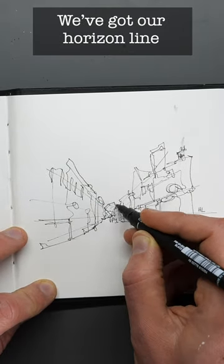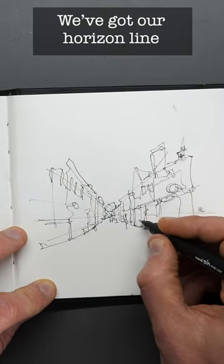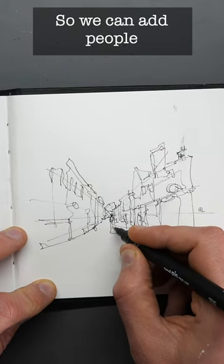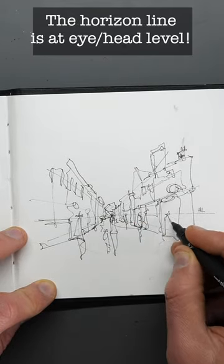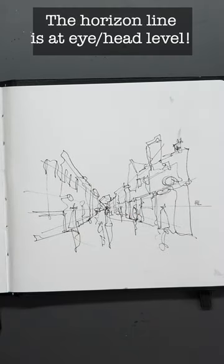But of course we can go a step further. We've got our horizon line so we can add people. People's heads are always on the horizon line because the horizon line is at eye level, at head level. And just like that, we're done.